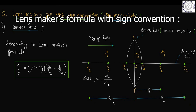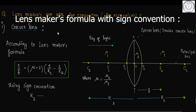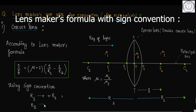Here, mu equals mu2 divided by mu1, which is the relative refractive index of the lens with the surrounding medium. Using sign convention, the radius of curvature of the first surface R1 should be positive, and the radius of curvature of the second surface R2 should be negative, that is, minus R2.